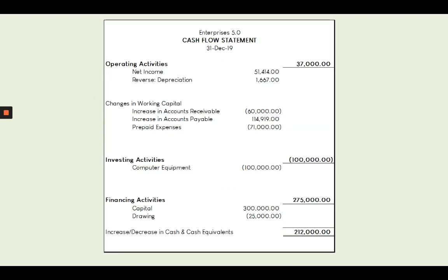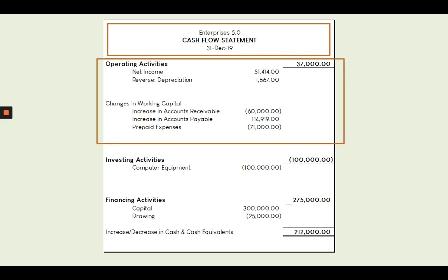Using the same problem, we generated this cash flow statement. Number one, we put a heading. Number two, in operating activities, net income is positive since it puts money into the business. We reverse depreciation because depreciation is a non-cash expense — although it reduces asset value, we did not actually dispense money for it. So whenever we have a depreciation account, it should always be reversed.